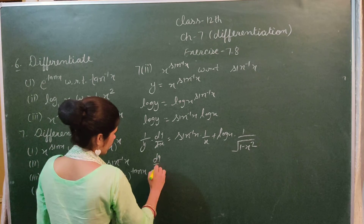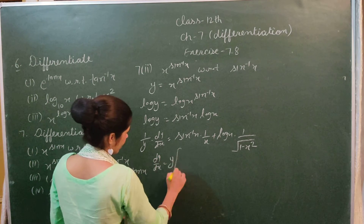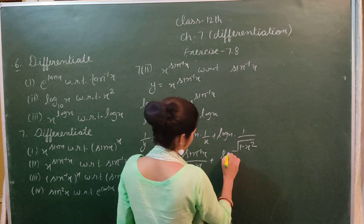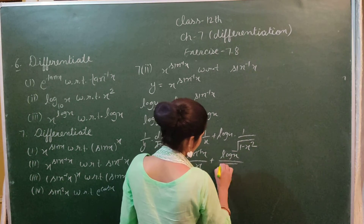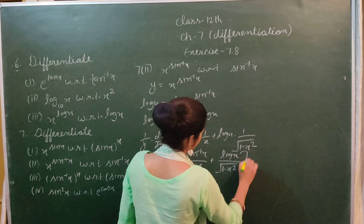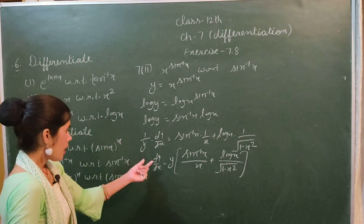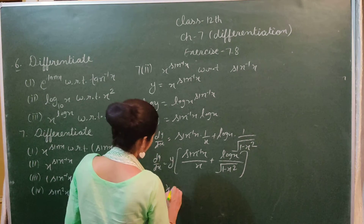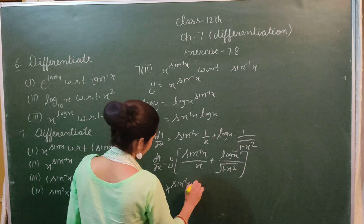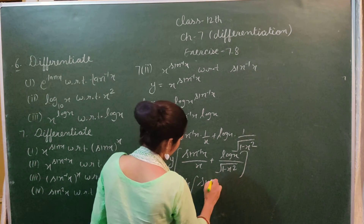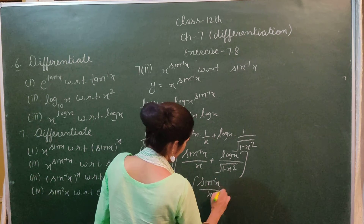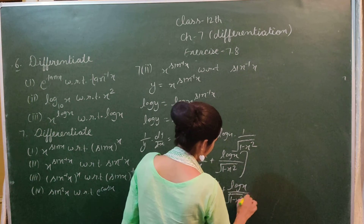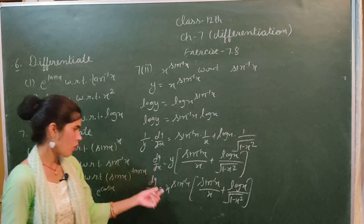Therefore dy/dx = y times (sin⁻¹x / x + log x / √(1 - x²)). Substituting y = x^(sin⁻¹x), we get dy/dx = x^(sin⁻¹x) times (sin⁻¹x / x + log x / √(1 - x²)).